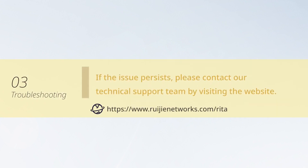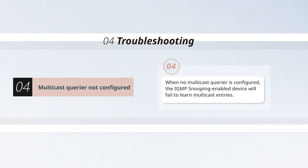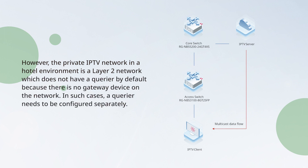If the issue persists, please contact our technical support team by visiting the website. When no multicast querier is configured, the IGMP snooping enabled device will fail to learn multicast entries. In a typical Layer 3 multicast environment, the gateway has IGMP or PIM enabled and acts as the querier, while Layer 2 devices with IGMP snooping enabled listen to IGMP messages to maintain multicast entries. However, the private IPTV network in a hotel environment is a Layer 2 network which does not have a querier by default because there is no gateway device on the network. In such cases, a querier needs to be configured separately.